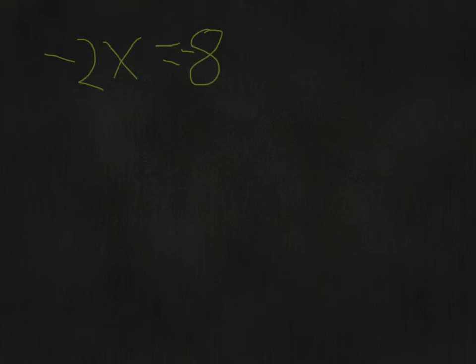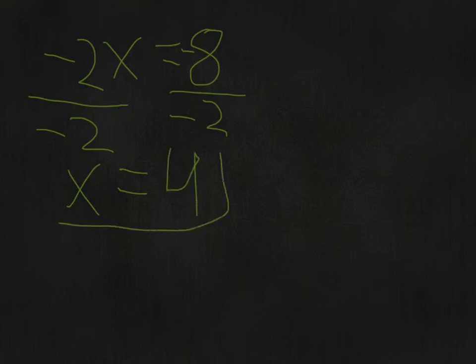So first, because you want to isolate the x, you divide by -2 on both sides. That leaves you with x equals... and here's where the negative numbers come into play. A negative divided by a negative is a positive, so x = 4.